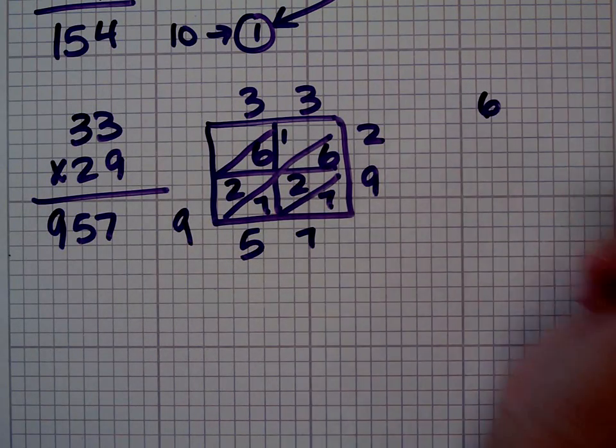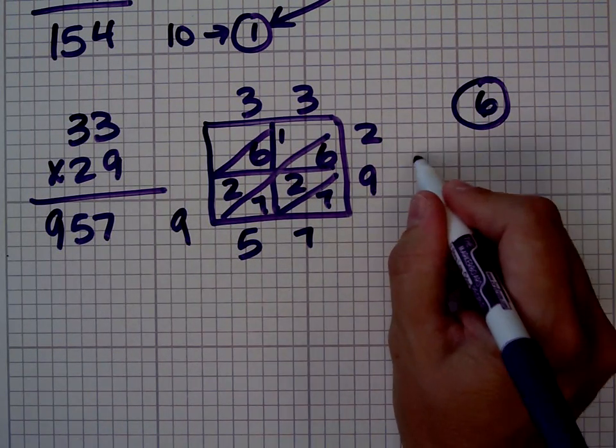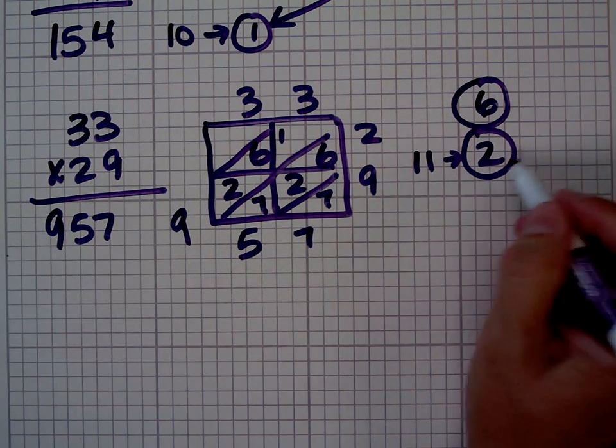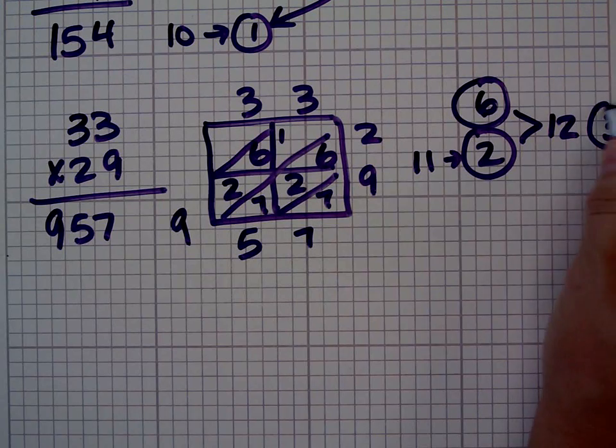The digital root of 33 is 6. The digital root of 29, 2 plus 9 is 11, which makes its digital root 2. 6 times 2 is 12, and the digital root of 12 is 3.